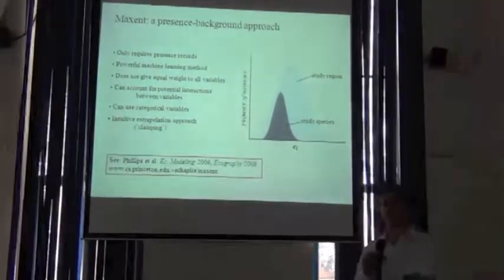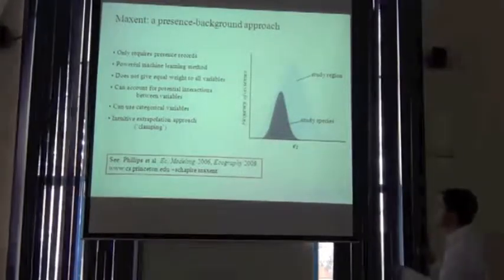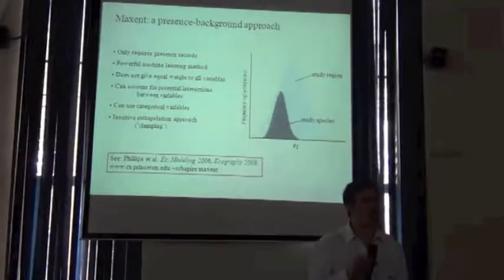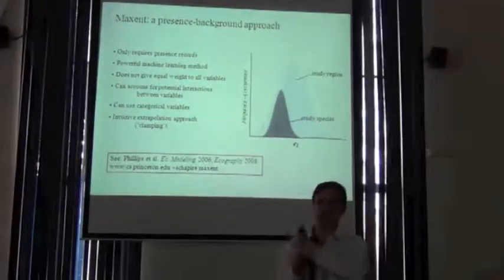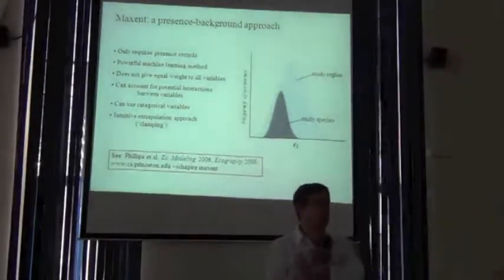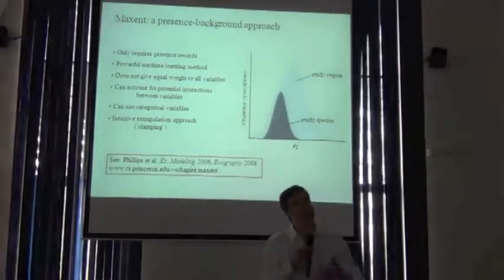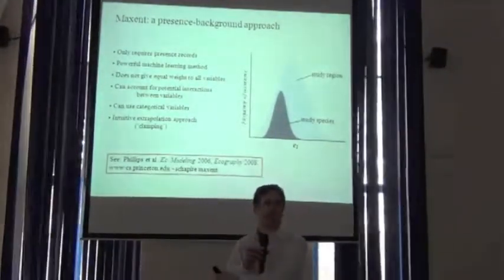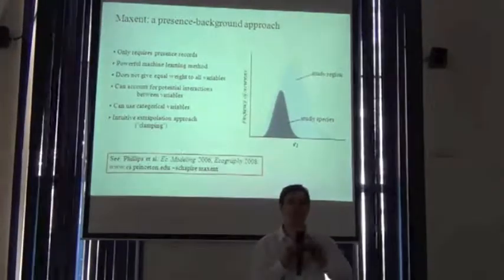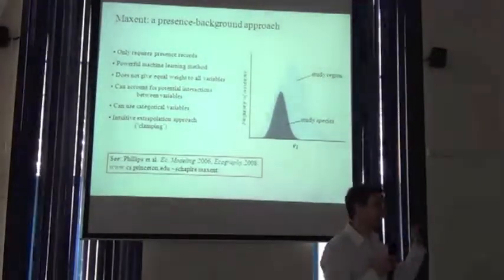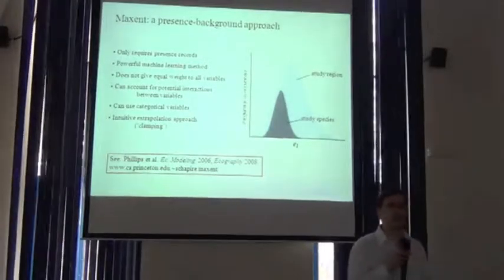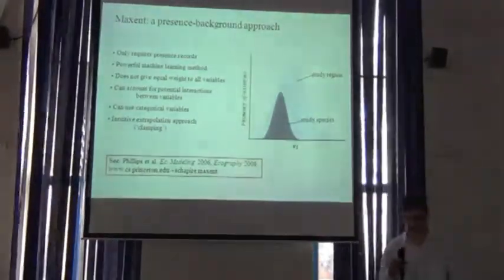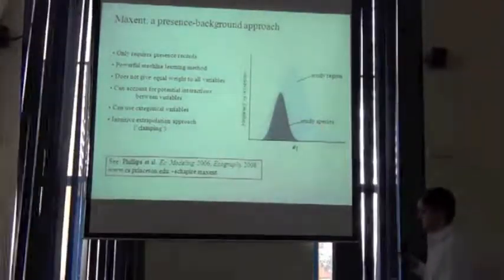It can account for potential interactions between variables, which again is something that the Bioclim model that we ran this morning can't do. It just treats each individual variable in exactly the same way in its function. Whereas approaches like MaxEnt can actually account for these interactions between variables. So you're not just going to say, well, the species can occur in very high temperatures. The model's going to be able to distinguish that, well, it can occur in very high temperatures, but only if there's a lot of precipitation. Okay? So you're going to be able to look at those kinds of interactions, which you'll immediately think makes sense, and it's going to enable you to characterize the niche in a more advanced way.